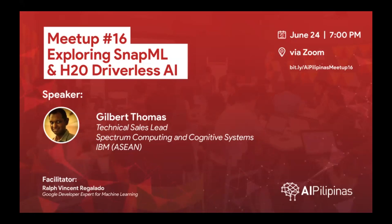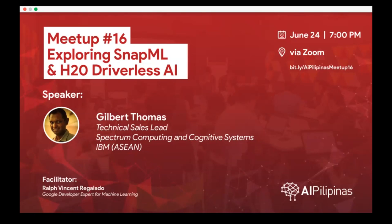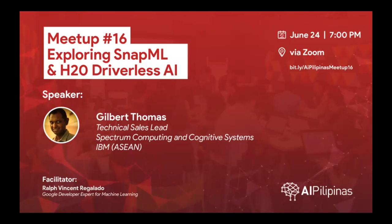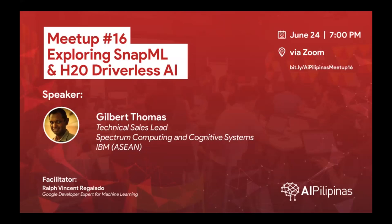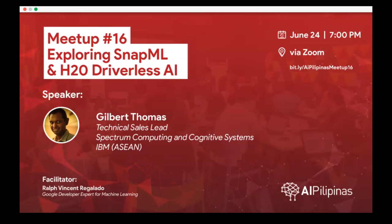For today, Gilbert will cover two technologies IBM provides to accelerate machine learning: Snap ML, which is free, and H2O Driverless AI, a commercial product that can be tested without limitations. He will also provide Jupyter notebook code and slides, to be posted in the meetup group the following day. He will then share his screen.